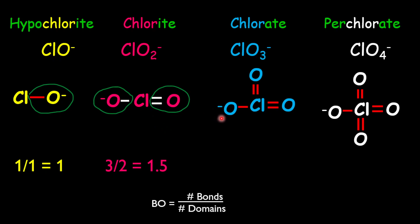In the third structure, which is the chlorate ion, we have a total of 5 bonds, 2 double bonds and a single bond. And we have 1, 2, 3 domains. So therefore, the bond order will be given as 5 divided by 3, which equals 1.67.